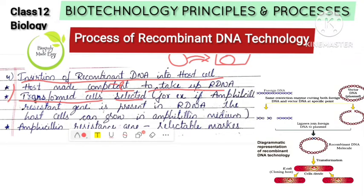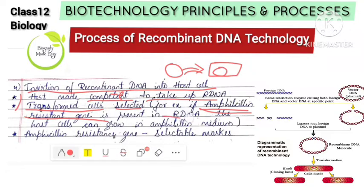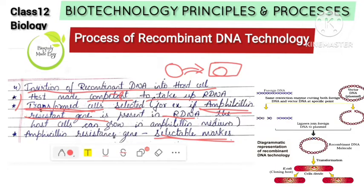After transformation, we select the transformed cells. The ampicillin-resistant gene is used as a selectable marker — a requirement of cloning vectors. Using selectable markers, transformed cells are selected and non-transformed cells are eliminated. This ensures only cells carrying the recombinant DNA are kept.